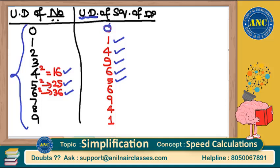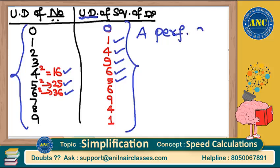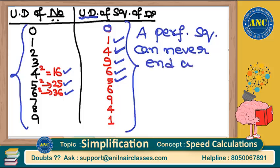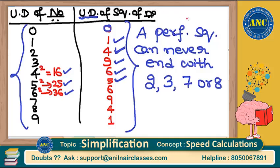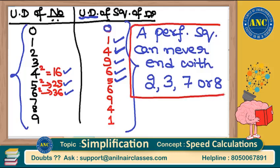A perfect square can never end with 2, 3, 7, or 8. This is a very important point for examination purposes. A perfect square can end with 1, 4, 9, 6, or 5 — but never with 2, 3, 7, or 8. Using this point, we can solve certain questions very quickly and beautifully.